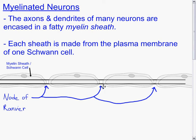There are little gaps between each Schwann cell, and those are called the nodes of Ranvier. So we have multiple Schwann cells lining the neuron, wrapped around it much like an insulator on a wire, except there are gaps in between the Schwann cells.